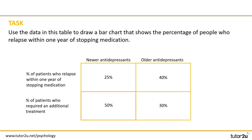Another skill is to use available data to draw your own graphs. Take care in these types of questions to choose the right type of graph — you can tell this from the type of data and the study that you're dealing with. For this next task, use the data in this table to draw a bar chart that shows the percentage of people who relapse within one year of stopping medication. Pause the video for five minutes while you sketch your graph.